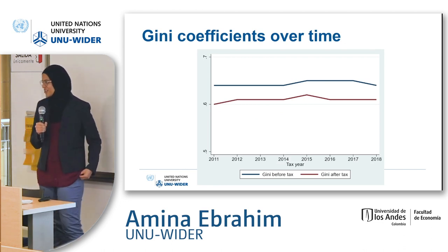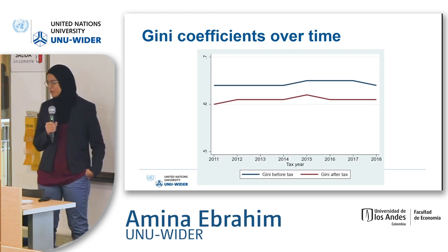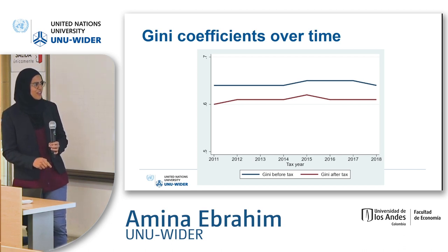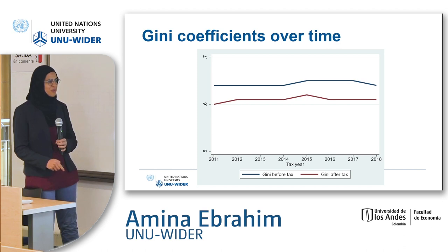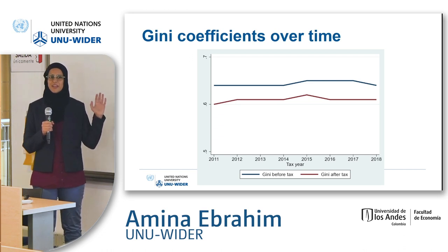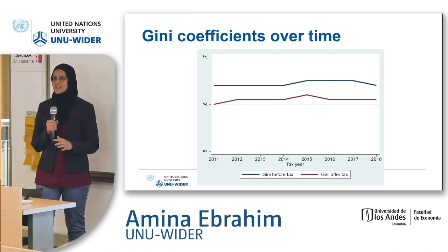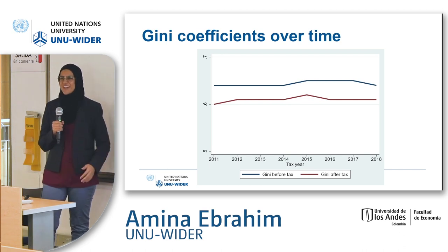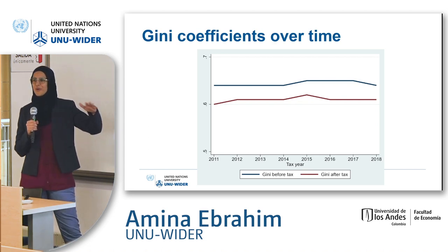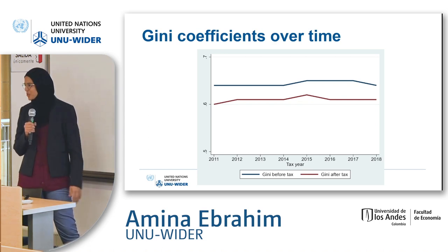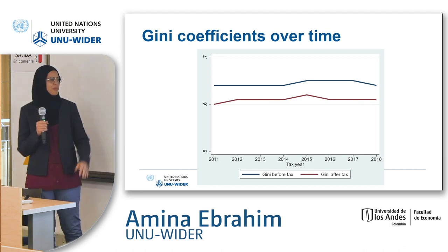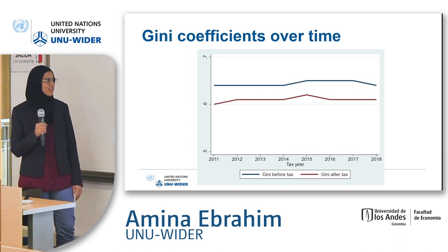In terms of the Gini coefficient, our before-tax Gini is around 0.64 and after-tax it's about 0.61. This squares up quite nicely with the survey data at around 0.64, consistent with what we saw in yesterday's presentations. It was also interesting to see — in the earlier presentation — what you can start to think about in terms of tax reforms for changing this distribution, though we haven't got to that stage yet.